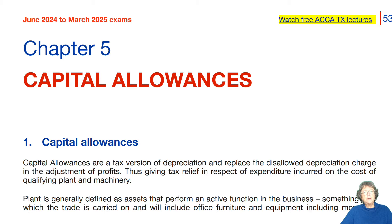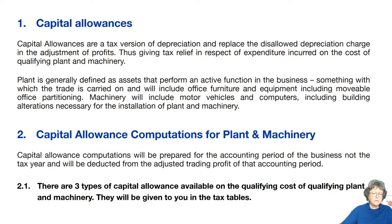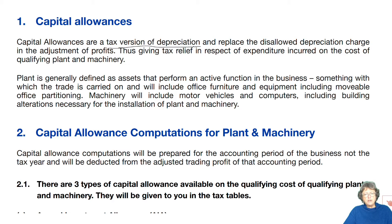Now, over time, these capital allowances have been tested under law and we have here the main principles regarding capital allowances. They are, as it states here in this chapter, a tax version of depreciation and they replace the disallowed depreciation charge, which we have dealt with in the previous chapter. And they give tax relief for the fact that the expenditure does go down in value.